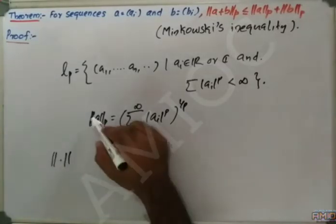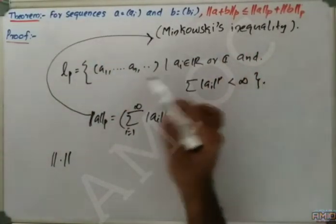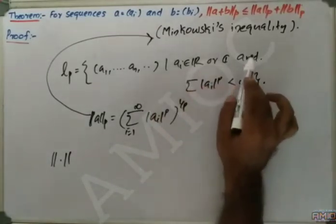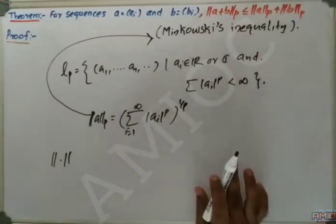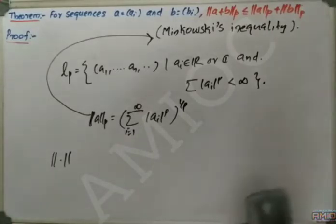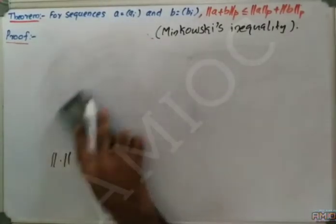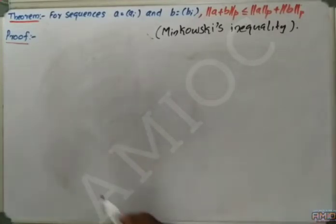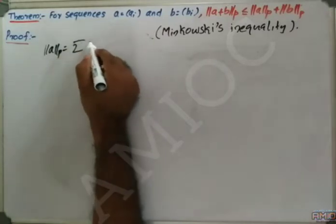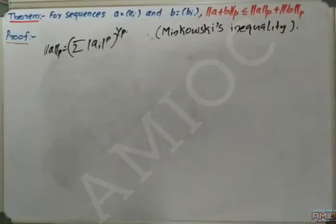This is our defined norm. We want to show this is indeed a norm. To prove the triangle inequality of the norm, we want to show Minkowski's inequality, which is actually the triangle inequality for the Lp space with the defined norm.